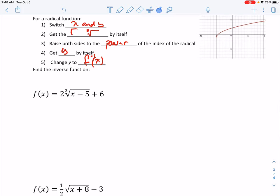So the first step, switch your x and y. So x equals 2 cube root y minus 5 plus 6. We're going to get the radical by itself. So we're going to minus 6 on both sides. We're going to divide both sides by 2.